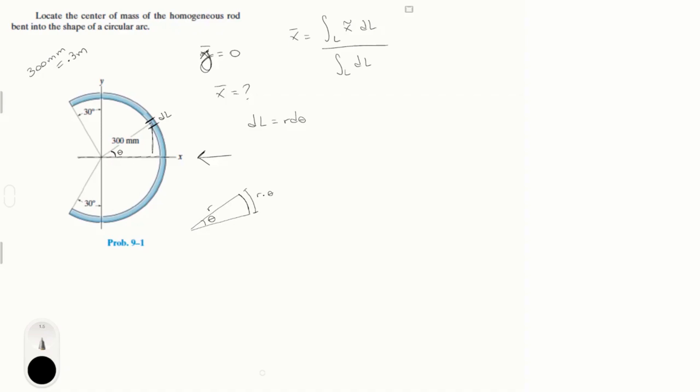So now that we have dl, let's find x curly which is located here right at dl, x curly. And you know that x curly is equal to r which is 0.3 times the cosine of that angle theta, because of basic trigonometry. And now we have all the values that we need to plug into that equation and solve it.